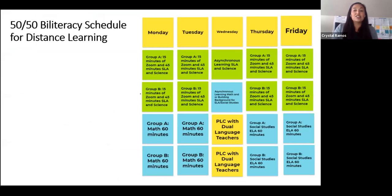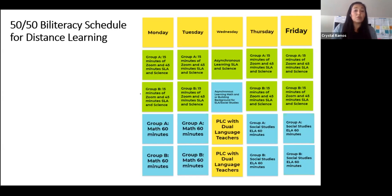During distance learning, small groups become very effective for instruction on your meeting platform. Looking at Monday's schedule, Group A would focus on 15 minutes of morning meeting to provide empathy and kindness by building connections with students. Then about 45 minutes of Spanish language arts integrated with science, which can be broken into smaller groups — the teacher does 30 minutes whole group, then 15 minutes with an interventionist or instructional support staff working on the same content with additional focused standards.